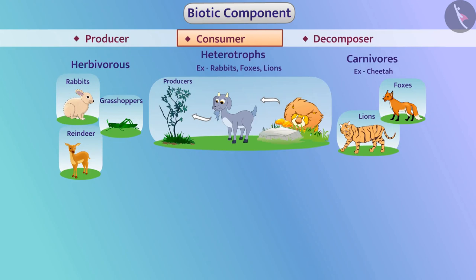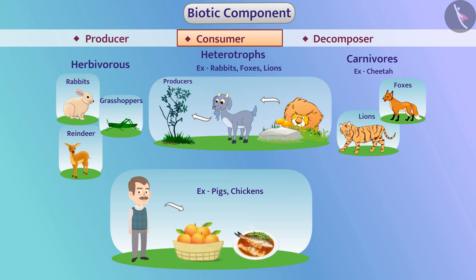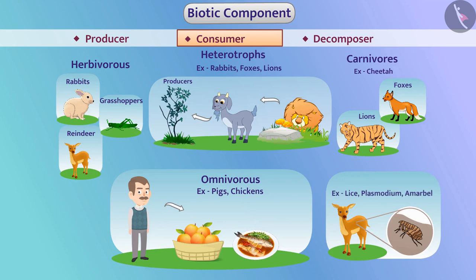Some organisms, such as humans, pigs, and chickens, obtain their food from both plants as well as other animals — these are called omnivores. Some organisms like lice and plasmodium obtain food from the body of another organism without killing it — these are called parasites.